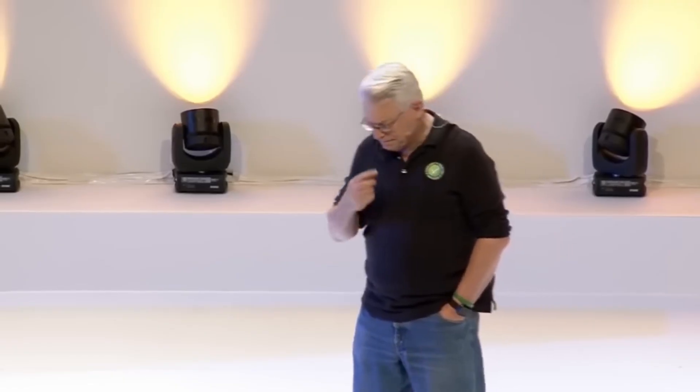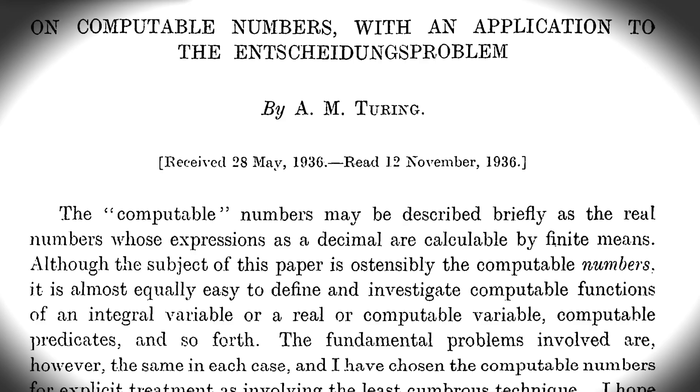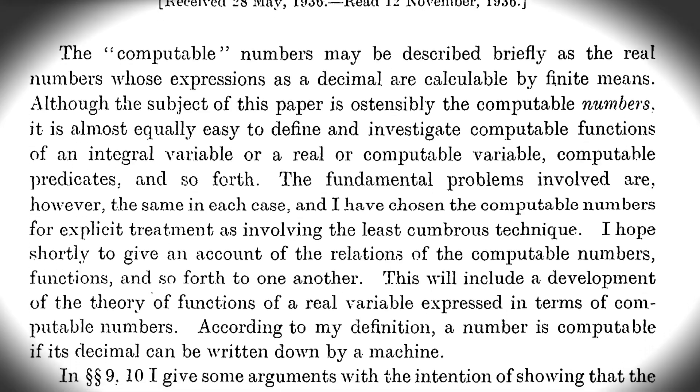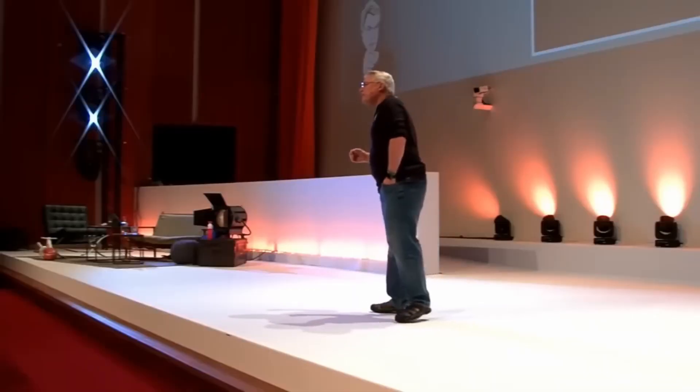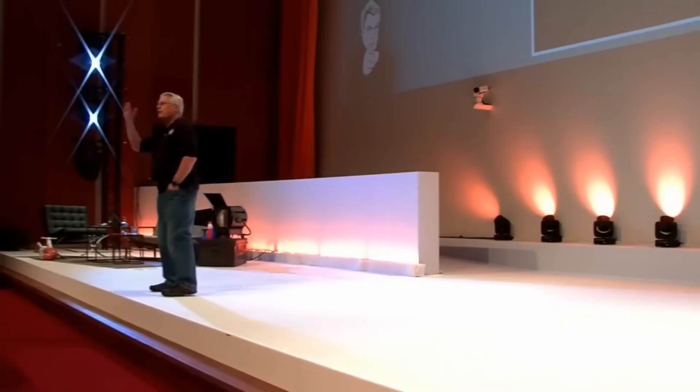But then he noticed something: there were certain algorithms that could not be proven correct — no rational way to prove them correct. He discovered that those algorithms were the ones that had unrestrained go-tos. This is something that Turing had actually proved in 1936 — the halting problem — which established that there are certain algorithms that cannot be proven correct.